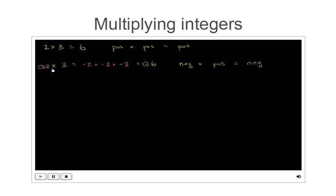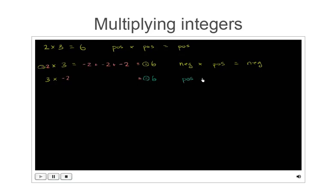What if we swap the order and multiply 3 times negative 2? The order of multiplication shouldn't change the product — just as 2 times 3 and 3 times 2 both equal 6. So 3 times negative 2 is also negative 6. A positive times a negative is also going to be negative.